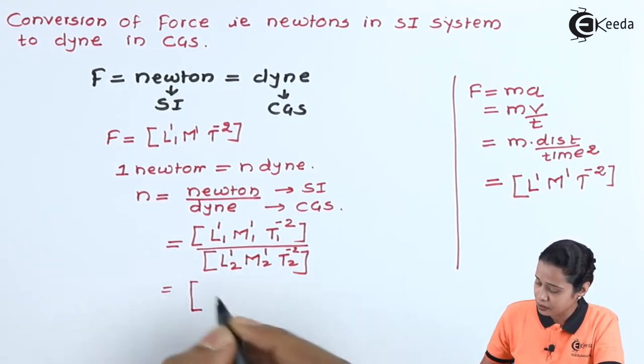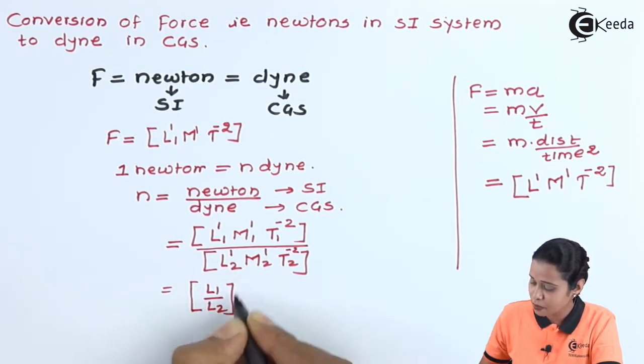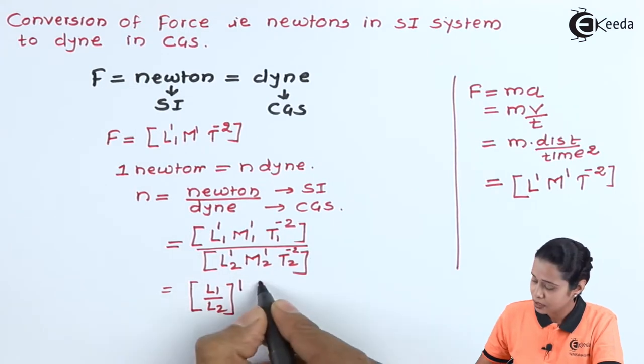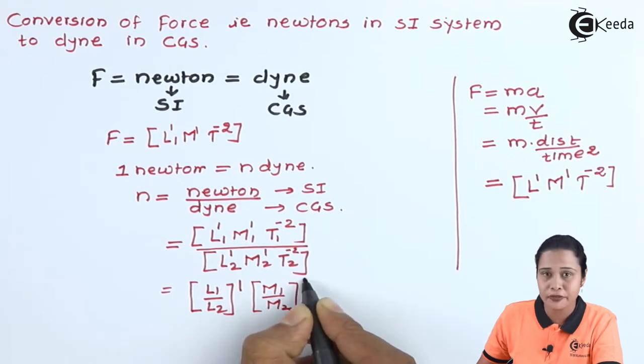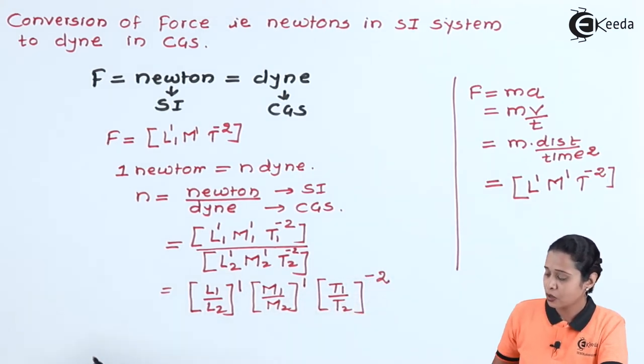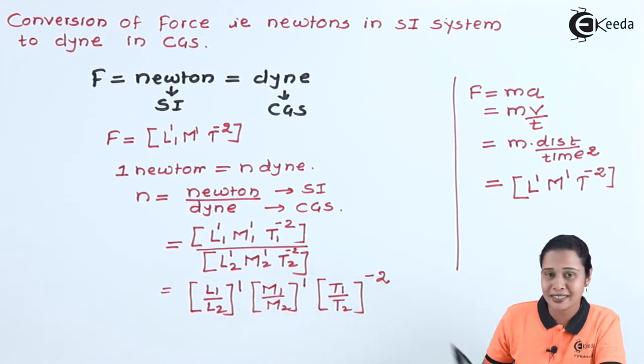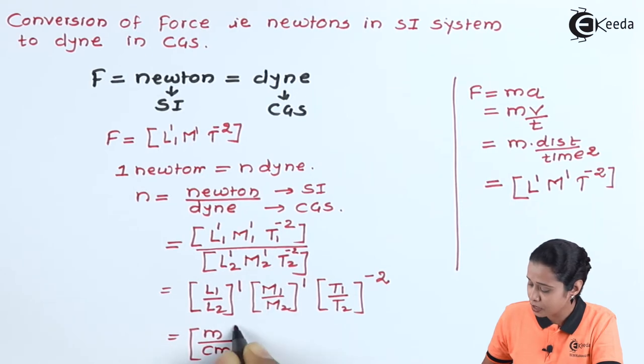Now let us write down in a separate manner. This is L1 by L2, its power is 1. Then we have M1 by M2, its power is again 1. Then we have T1 by T2, its power is minus 2. Now, the first system that is SI, we can write it MKS. So length here is in meters and in CGS system we have length in centimeter, its power is 1.